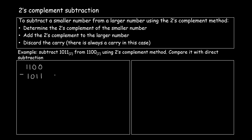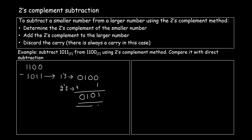The first step is to determine the 2's complement of the smaller number, which is 1011. To find the 2's complement, I first find the 1's complement, which is 0100, and then add 1 to it. So the 2's complement of 1011 is 0101.